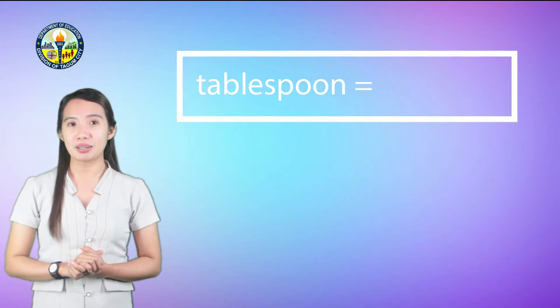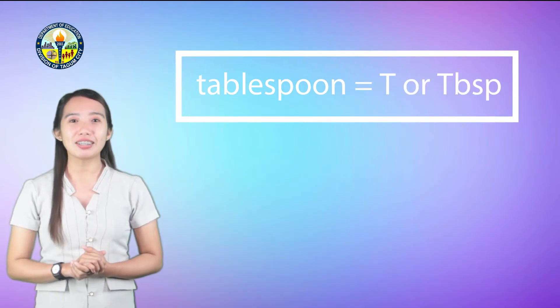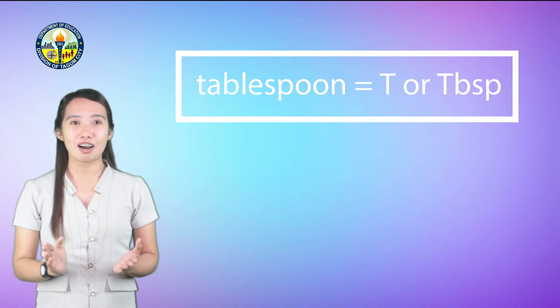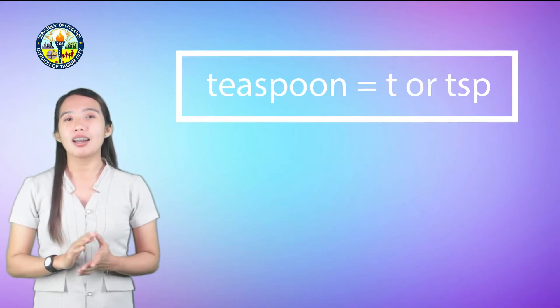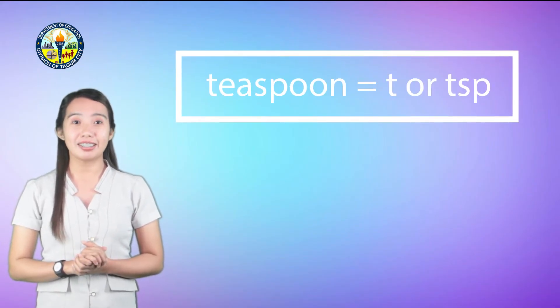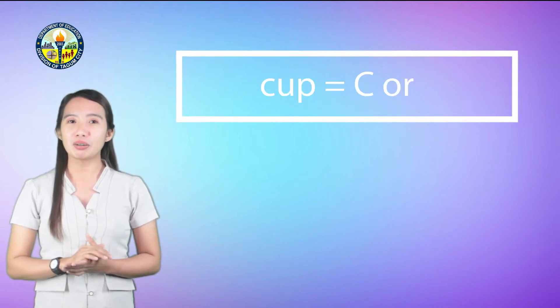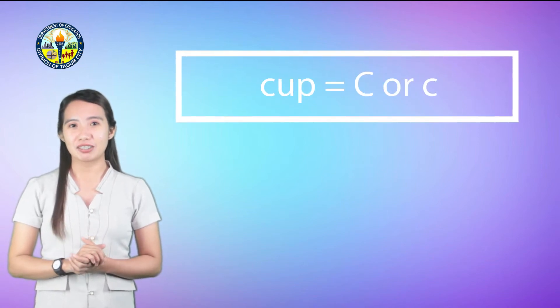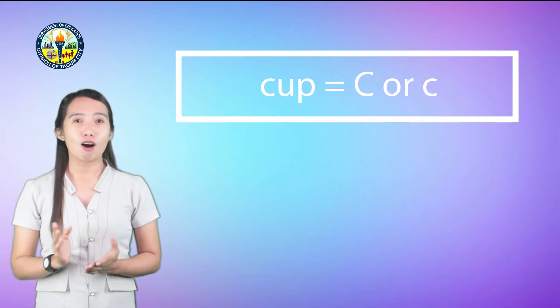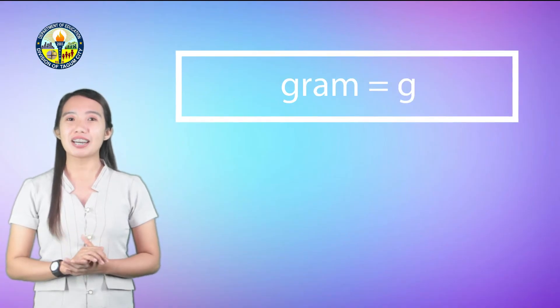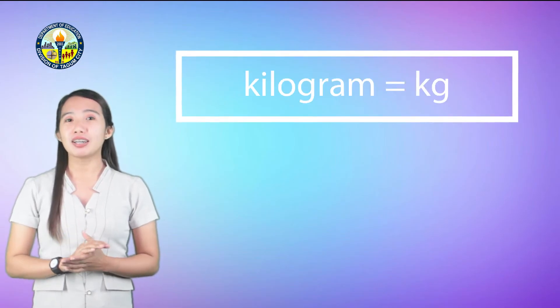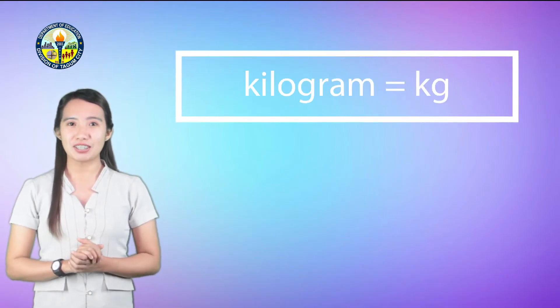For tablespoon, the cooking abbreviations are T or TBSP. For teaspoon, the cooking abbreviations are T or TSP. For cup, the cooking abbreviations are big letter C or small letter C. For gram, the cooking abbreviation is G. For kilogram, the cooking abbreviation is KG.